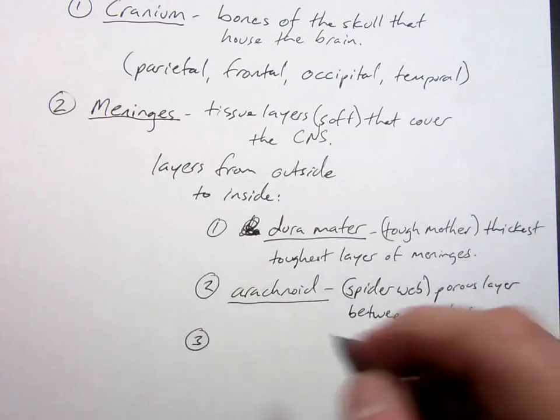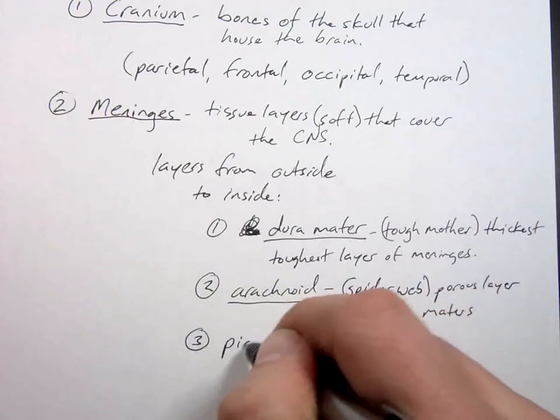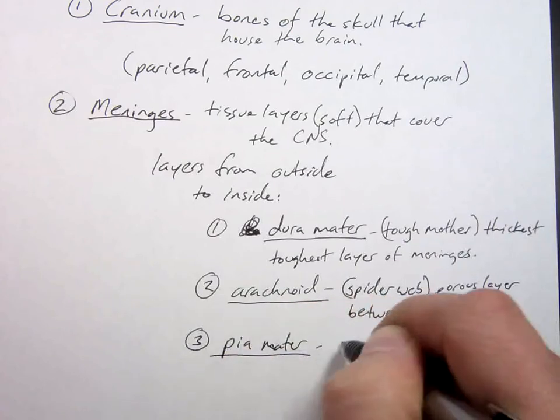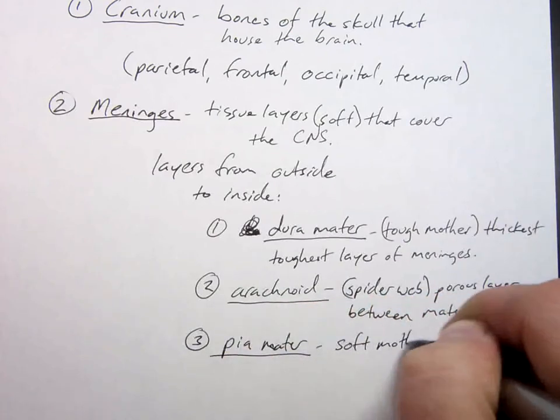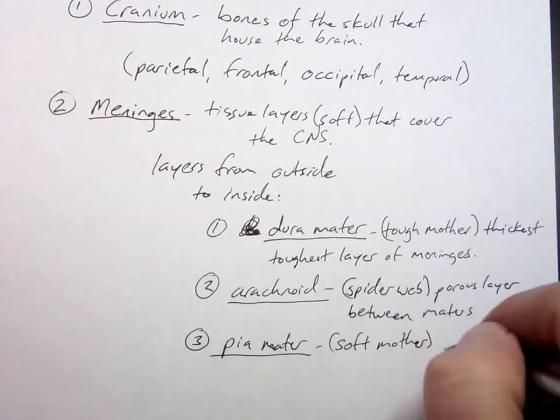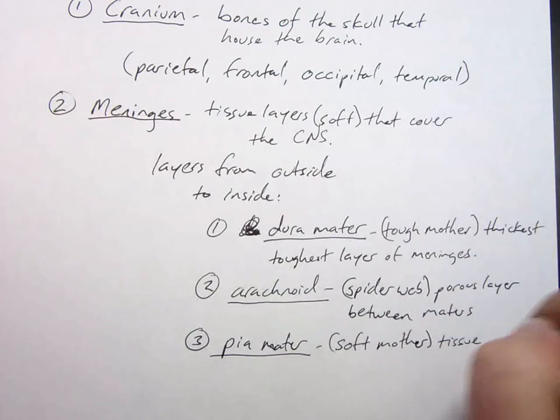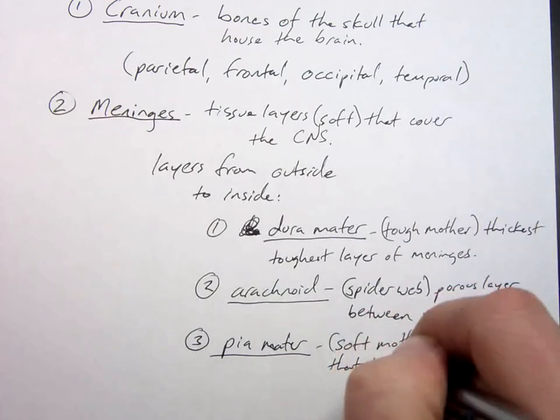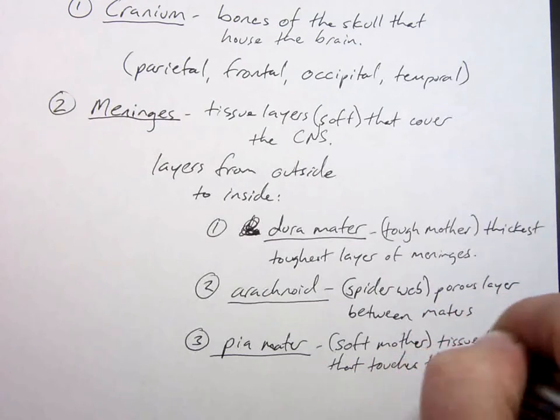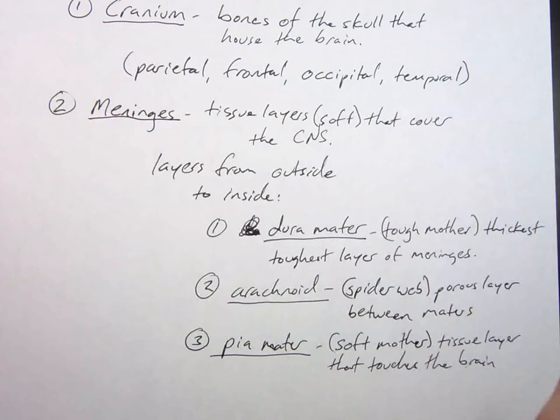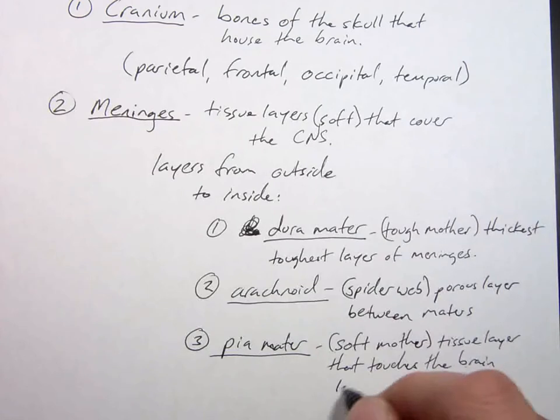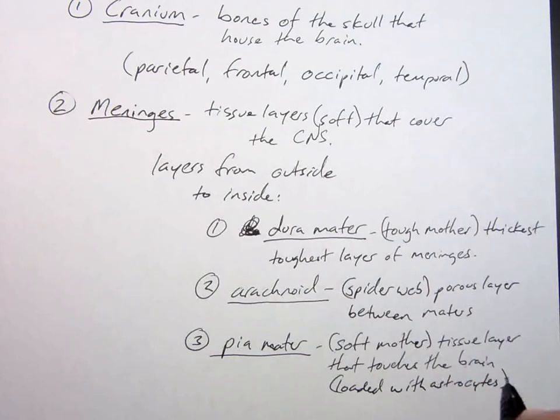We got a tough mother, we need a good cop bad cop situation. The pia mater. Literally means soft mother. Soft mother is tissue layer that touches the brain. This one is loaded with astrocytes, there's lots and lots of these particular cells there.